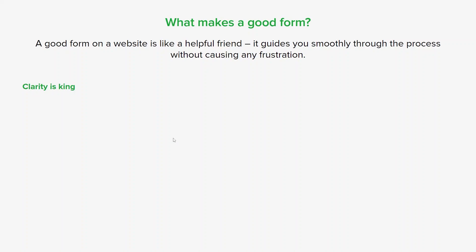First, you want to make sure that clarity is king. Think about the purpose of your form and make the form's goal crystal clear from the start — what information are you collecting and why? Use clear and concise labels for each field, avoiding jargon or technical terms. If needed, provide brief instructions or examples of what users should be putting in each field.